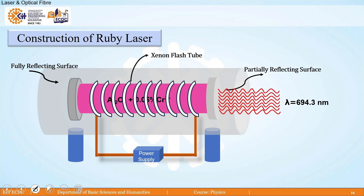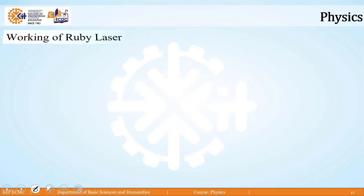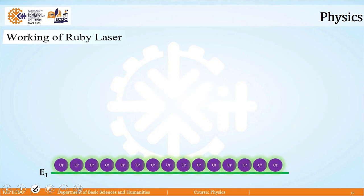Now, how actually we get this light, that to understand we need to understand the working of ruby laser. Working of ruby laser we can understand in a better way by using an energy level diagram. Remember here in ruby laser the active centers are chromium ions. So, we are going to draw this energy level diagram for chromium ions. Before putting this laser source on, chromium ions are present in their ground state.